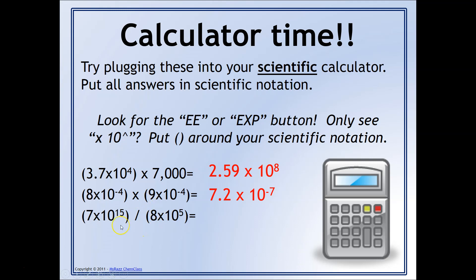For the final calculation, type in 7, EE, then 15 — no times ten. Then hit the division sign, then 8, EE or EXP, 5. If you are using times-ten-to-the-caret, you absolutely need parentheses around both parts of this division: (7 × 10^15) divided by (8 × 10^5). If you did that correctly, you should get 8.75 times ten to the ninth.